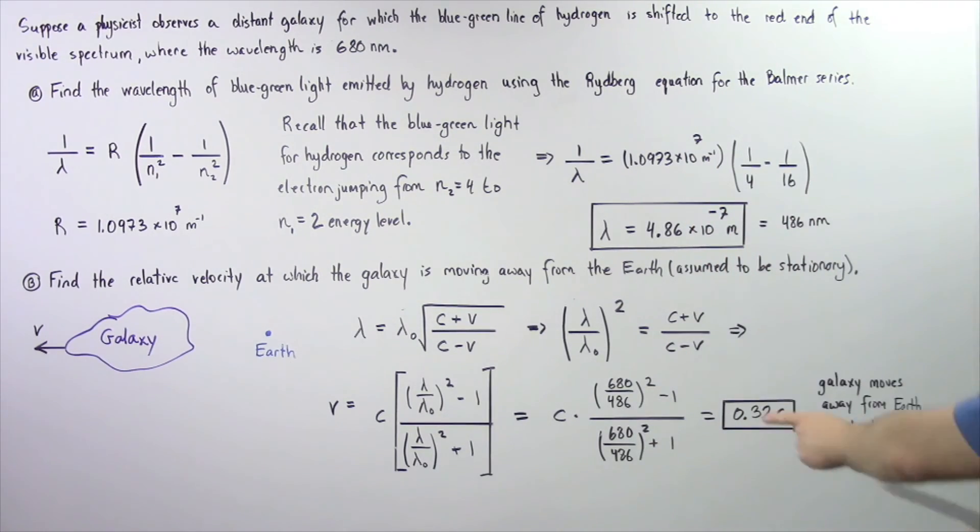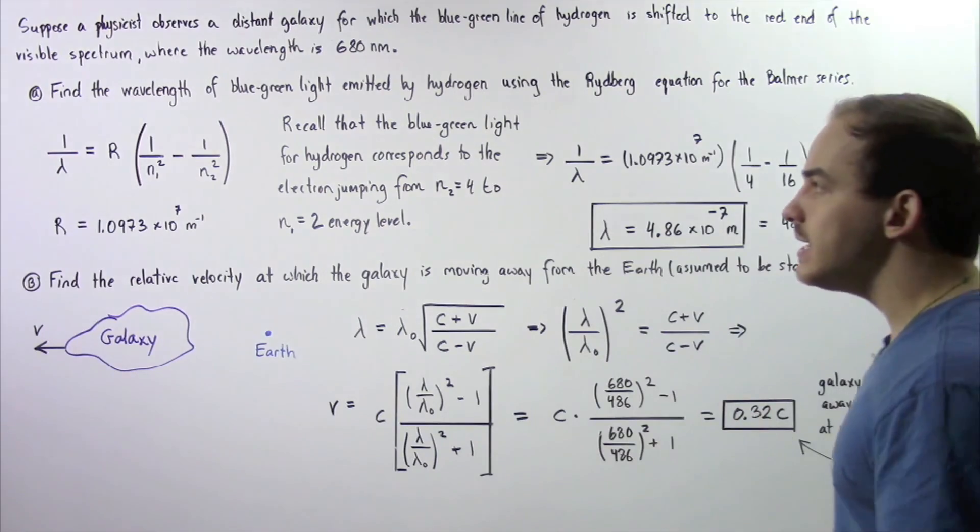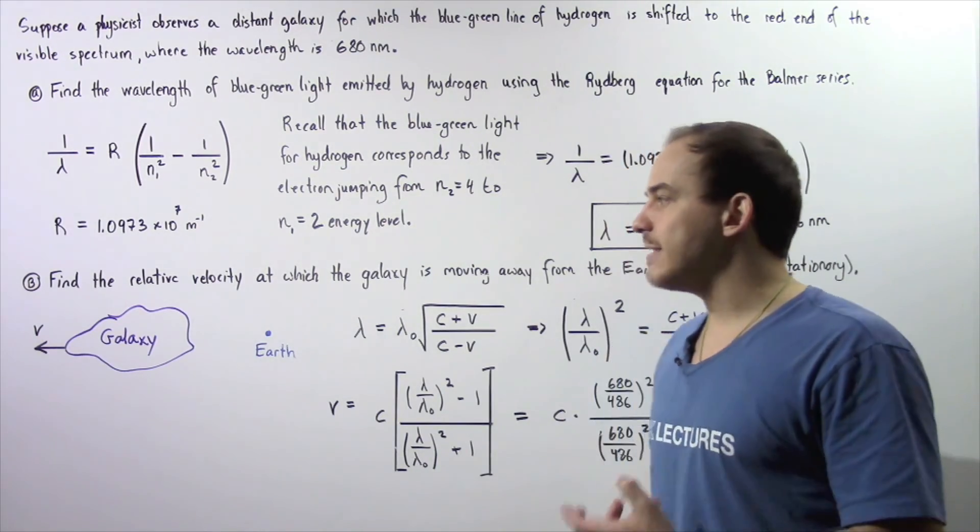So once again, the distant galaxy moves away from the Earth at a velocity of 0.32 multiplied by C, the speed of light in a vacuum.